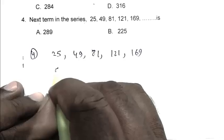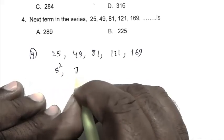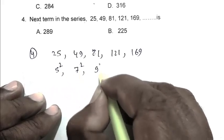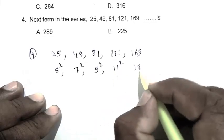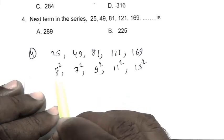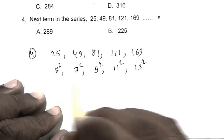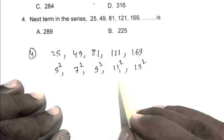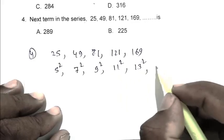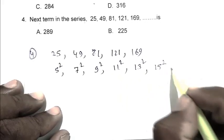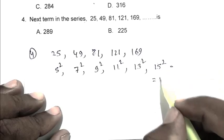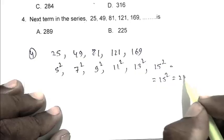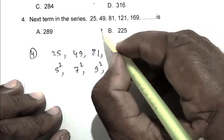25 is 5 squared, 49 is 7 squared, 81 is 9 squared, 121 is 11 squared, 169 is 13 squared. The series is odd numbers squared, so after that it's 15 squared, which equals 225. B is the right answer.